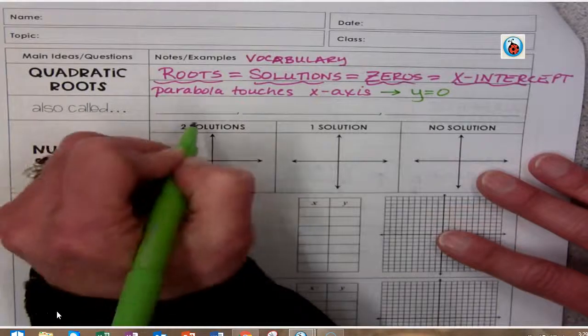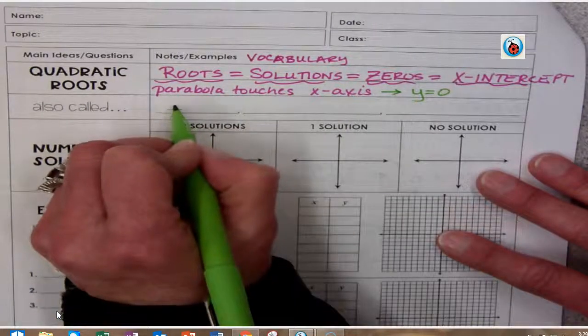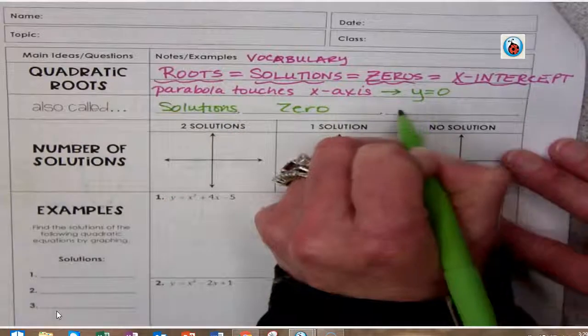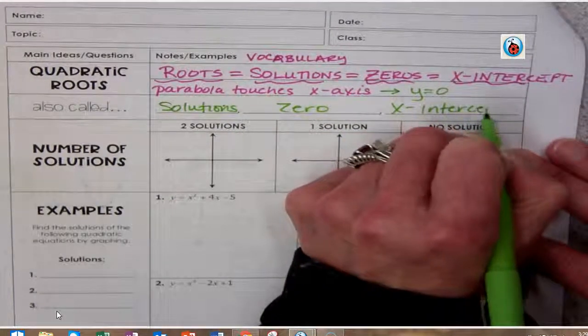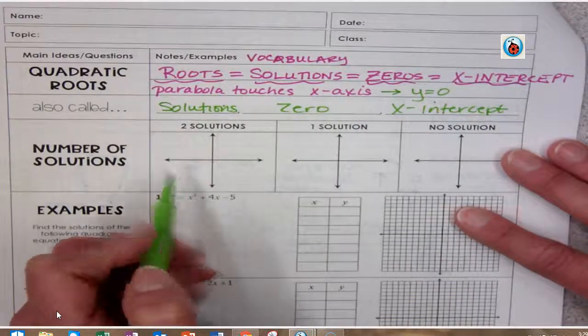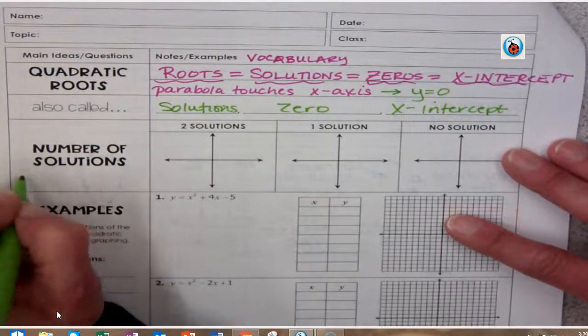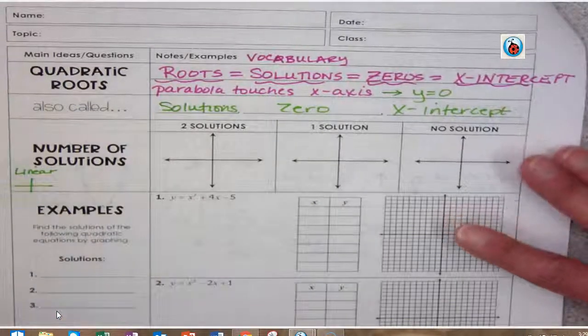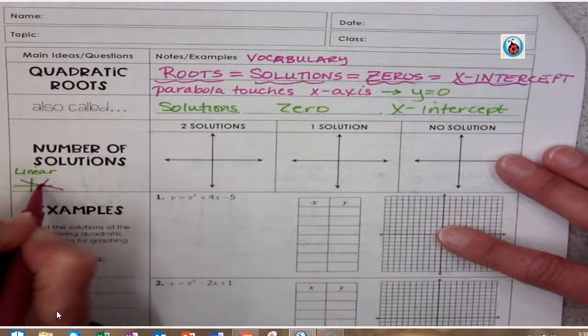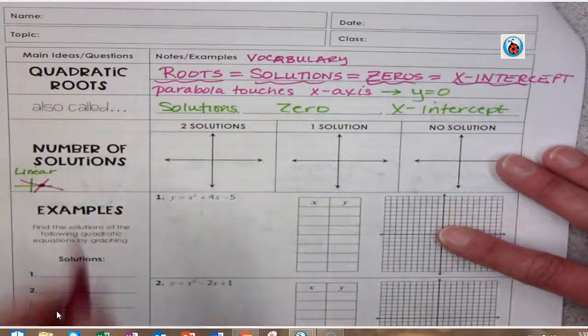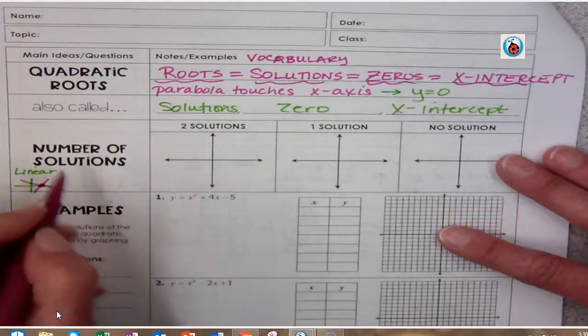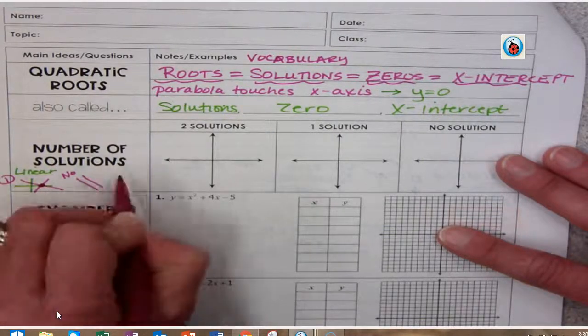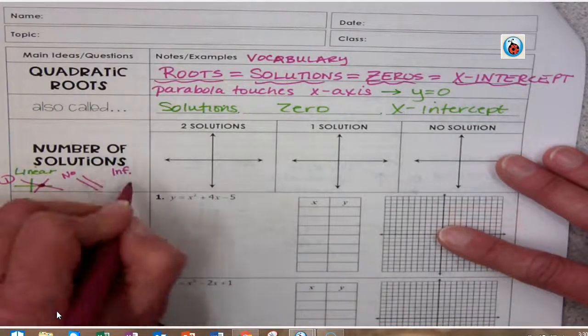Quadratic roots are basically those three words: roots are also called solutions, zeros, and x-intercepts. Now we talked about linear equations. When I have one solution for linear, that's where lines cross at one point. If I have no solutions, the lines are parallel. And infinite solutions look like the same line.